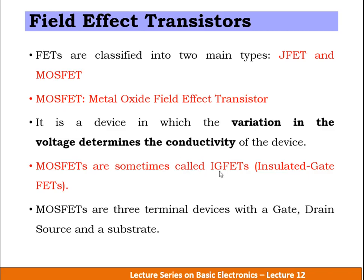MOSFETs are sometimes called IGFET, which stands for Insulated Gate Field Effect Transistor. It is called so because the semiconductor channel and the gate are separated by a very thin oxide layer (SiO2), meaning there is no direct electrical connection between the gate and the channel.